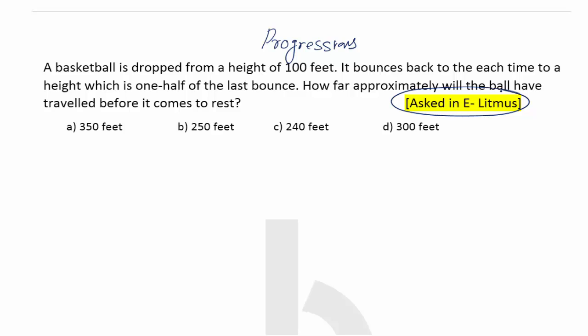Here the question says: a basketball is dropped from a height of 100 feet and it bounces back each time to one half of the last bounce. If this is the case, approximately how far does the ball have to travel before it comes to rest? Option A: 350 feet, Option B: 250 feet, Option C: 240 feet, and Option D: 300 feet.